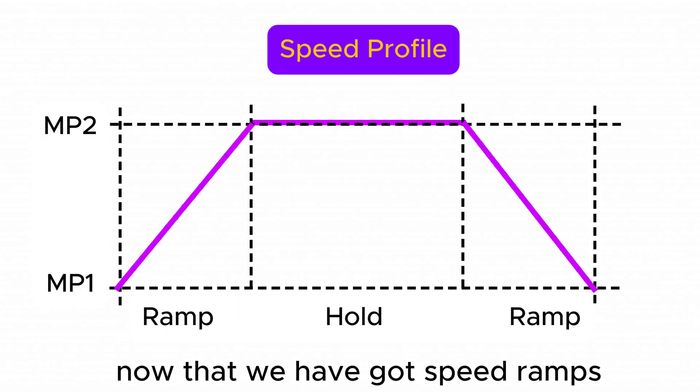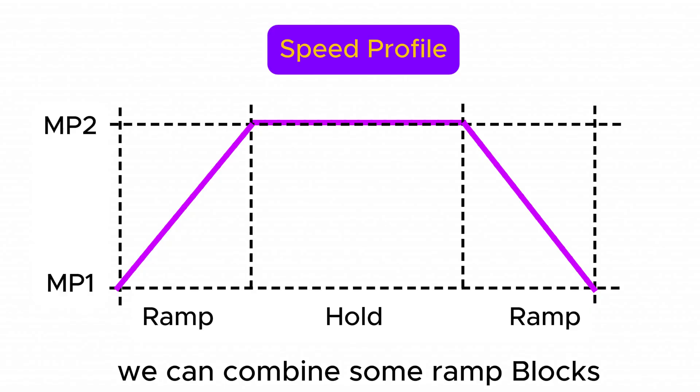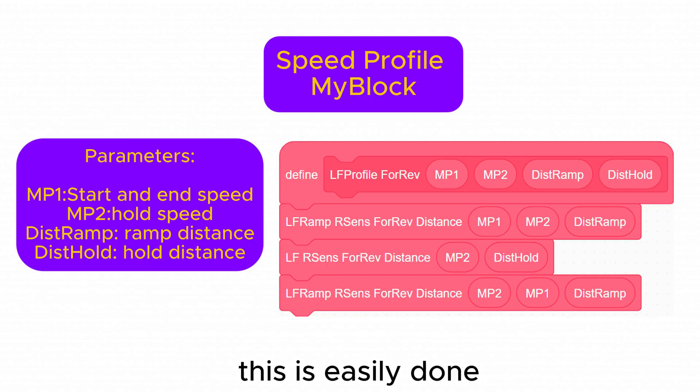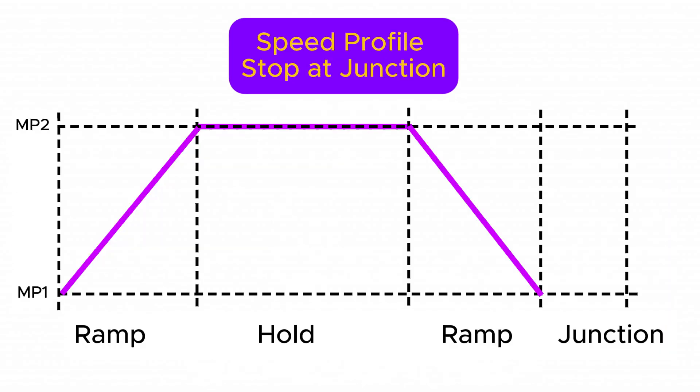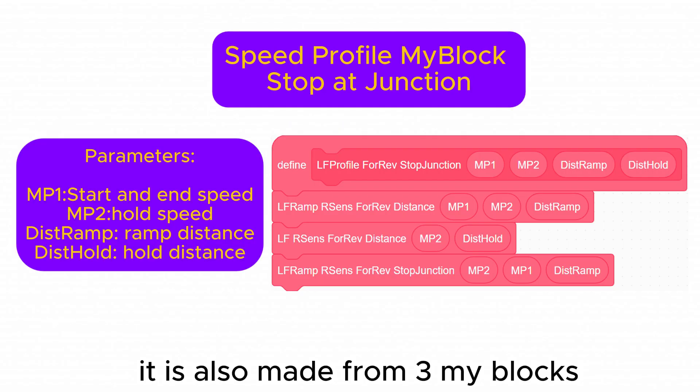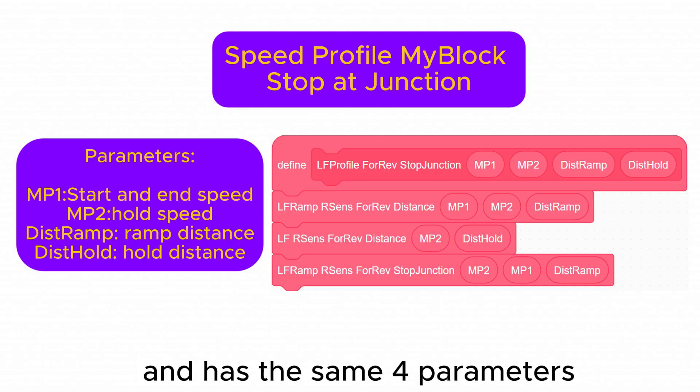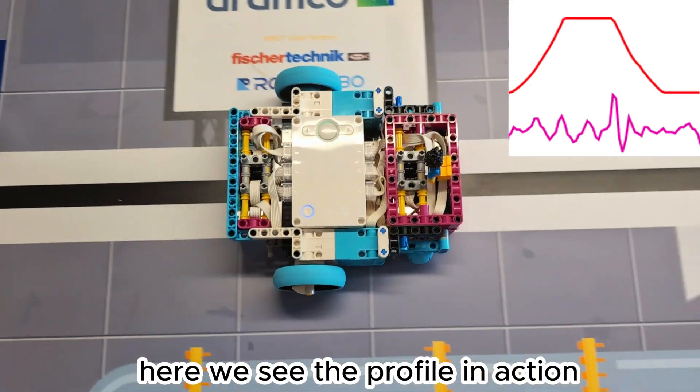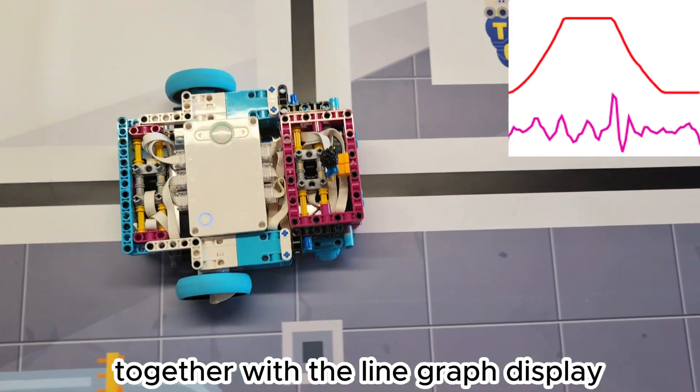Now that we have got speed ramps we can combine some ramp blocks to make a speed profile my block which ramps up the speed holds it for a distance and ramps down again. This is easily done by combining three my blocks as shown here. This speed profile is similar but it continues to the next junction after the second ramp. It is also made from three my blocks and has the same four parameters. Here we see the profile in action together with the line graph display.